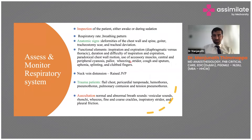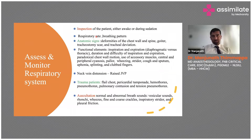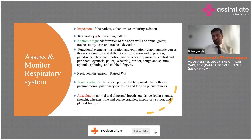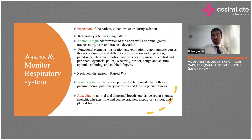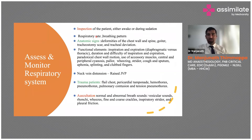For inspection of the ICU patient — who may be awake or sedated on ventilatory support — examine from airway to toe. Look at respiratory rate, breathing pattern, thoracoabdominal or abdominal-thoracic movement, whether it's rapid and shallow or normal. Check for anatomic signs: deformities of the chest wall and spine, goiter, tracheostomy scars, and tracheal deviation. These anatomic signs help plan procedures like intubation.